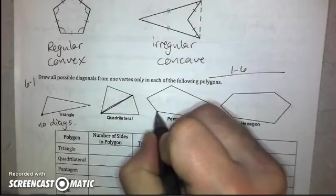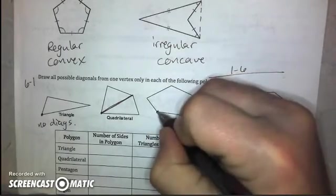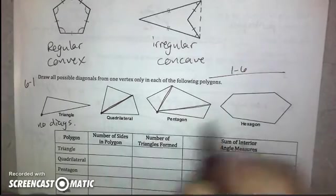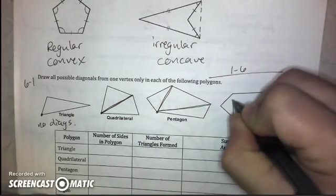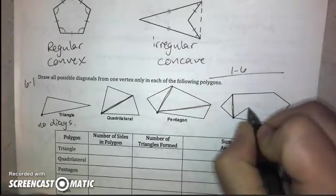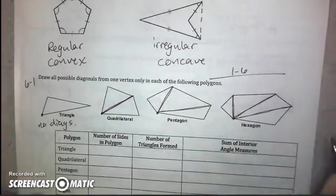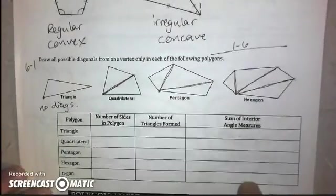In a pentagon, starting at the bottom left again, I can actually draw two diagonals. And in a hexagon, I can draw three.